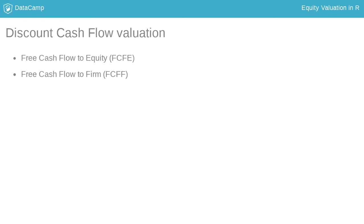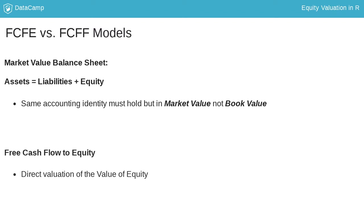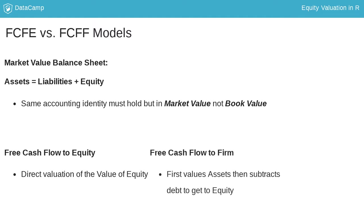There are two general kinds of DCF valuation approaches used in practice. We illustrate the difference between the two by looking at the market value balance sheet. Just like an accounting balance sheet, the market value of the assets of the firm must equal the market value of the firm's debt and the market value of the firm's equity. The first approach focuses on the direct valuation of the equity piece — that's what we will do in this course. The second approach first values the assets of the firm and then subtracts the debt to get to the equity piece.